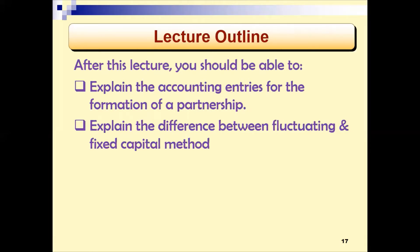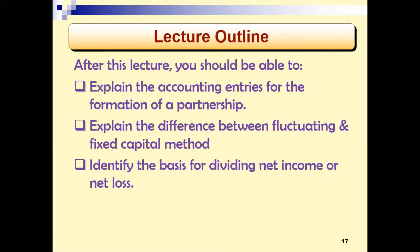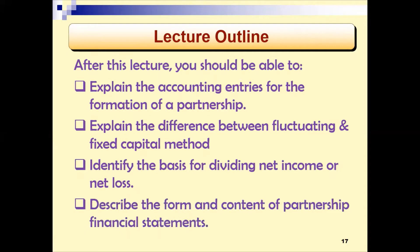The first method is called the fluctuating capital method, and the second is the fixed capital method. The next objective is to identify the basis for dividing net income or loss among the partners, otherwise known as appropriation — partnership appropriation, or appropriation of partnership profit. Lastly, we shall describe the form and content of partnership financial statements: the statement of profit or loss together with appropriation account, the statement of financial position, and how it differs from that of sole proprietorship.